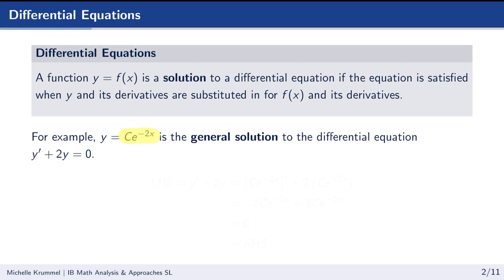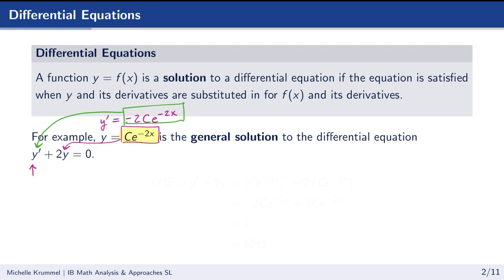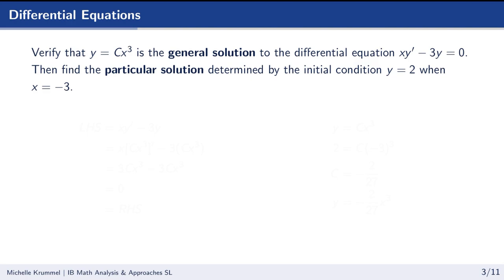If we substitute ce to the negative 2x in for y, we also need the proper value for y prime. If y equals ce to the negative 2x, then using the exponential rule, chain rule, and constant multiple rule, y prime equals negative 2ce to the negative 2x. Substituting both into y prime plus 2y gives zero on the left-hand side, which equals the right-hand side — confirming it is a solution.